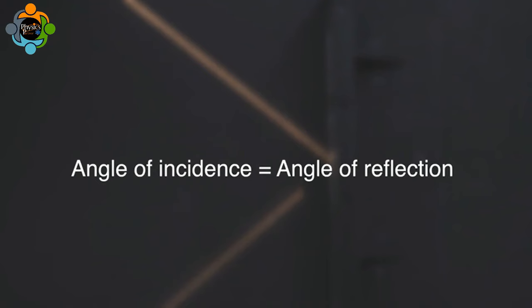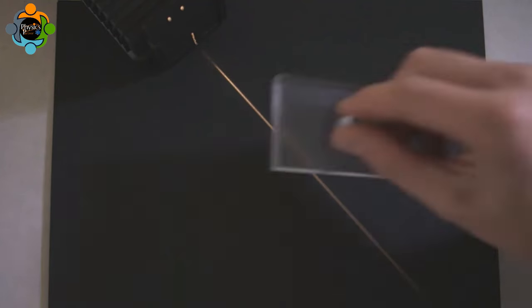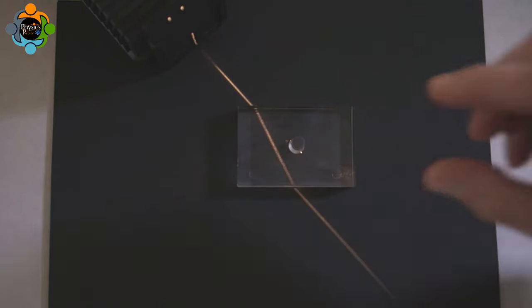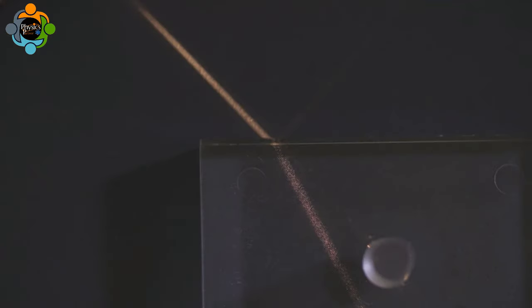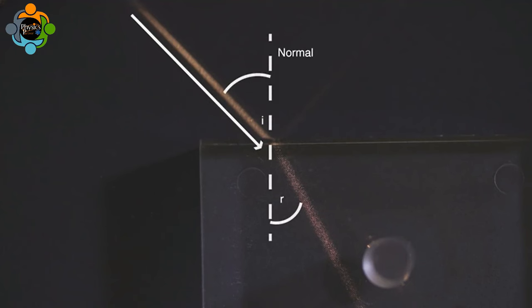Waves are slowed when they travel through different substances. As the light ray travels through the glass block, the path it was traveling on changes — the light ray is bent at the boundary of the two substances. This is called refraction. It is caused because the light ray travels more slowly in glass, which is more dense than air. If the angle of incidence and the refracted ray are measured, it is clear they are different.